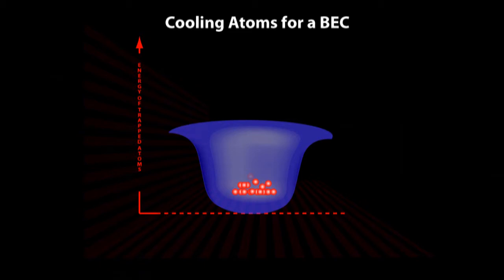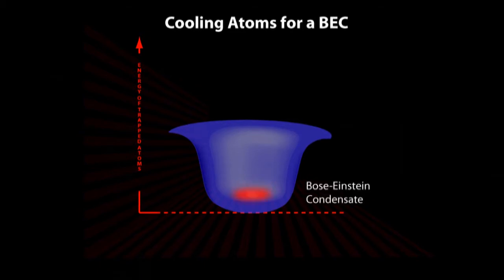We repeat the cooling until all the atoms are so cold that they all go to the lowest energy ground state. This is called a Bose-Einstein condensate.